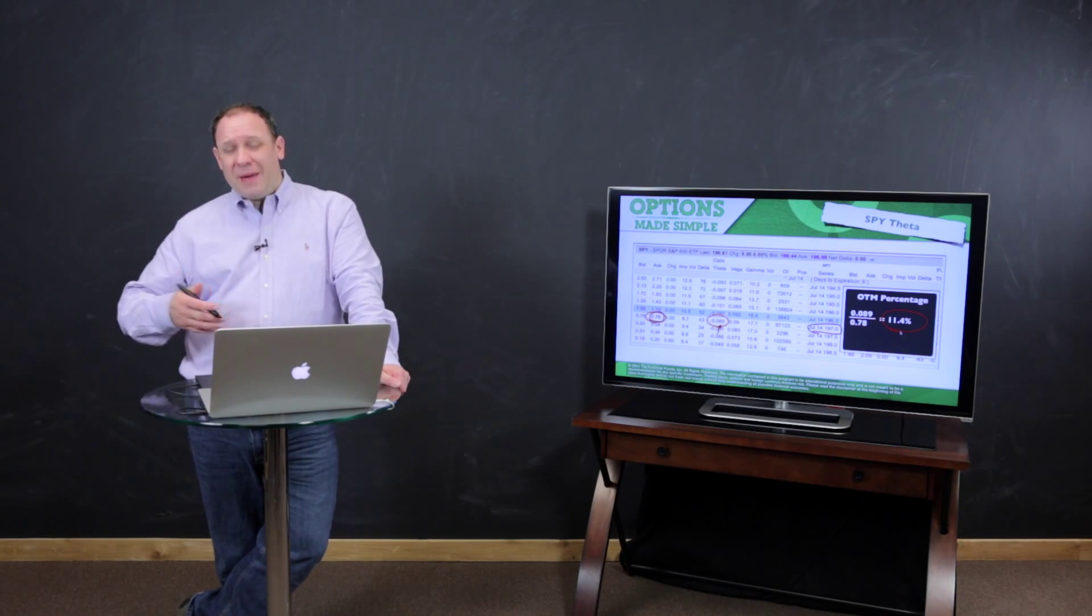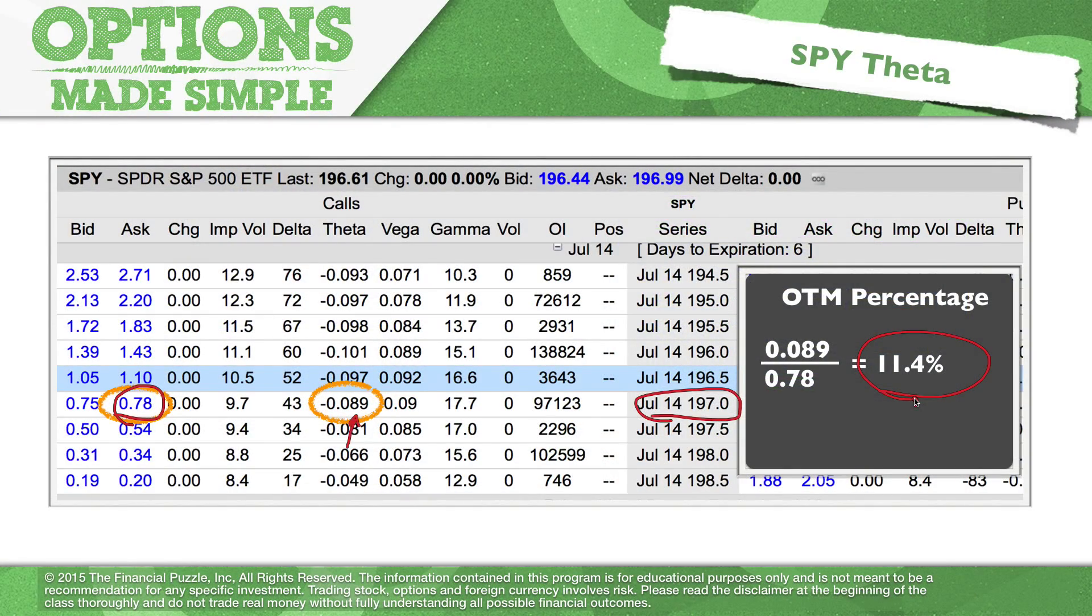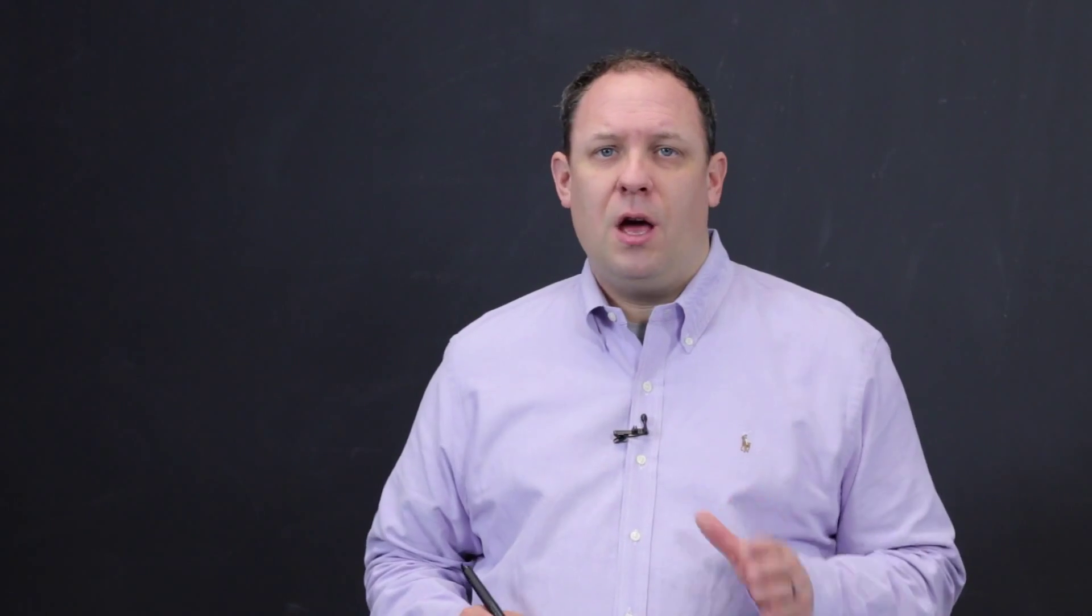Most people would be happy to make 11 percent in a year, and if you go buy this one strike price out of the money weekly option with six days to expiration, you go buy that option right here. Stock doesn't move and you hold it overnight. You just lost 11.4 percent over one day here of simply holding this really short-term option.